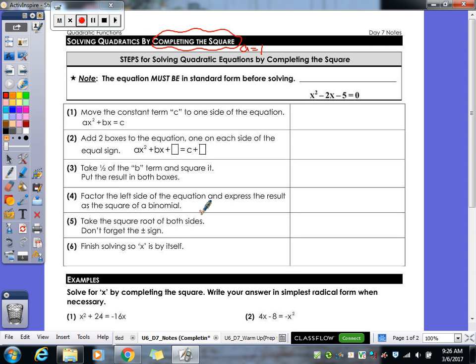So again, when we're doing completing the square, the equation must be in standard form. So our ax² + bx + c = 0. Since we're solving, it's got to be equal to zero. So here we have the steps listed out for you. First thing we have to do is you have to move your c term over to the other side of the equation. So if we look at my example here, my c is my 5.